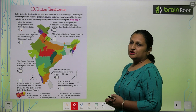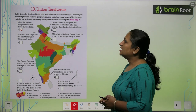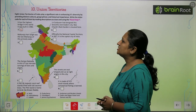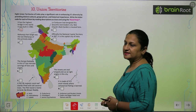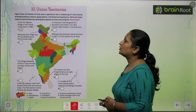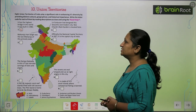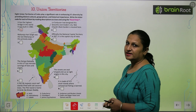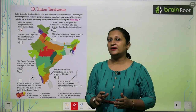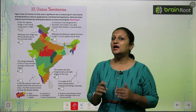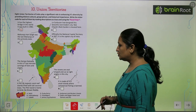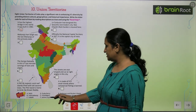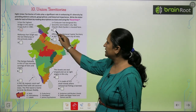Let's see number 2. Le Corbusier has designed this beautiful and modern city, and Nek Chand's Rock Garden is located here. Rock garden famous garden hai — wo kahaan located hai? Wo hai Chandigarh mein. So you will write E here.